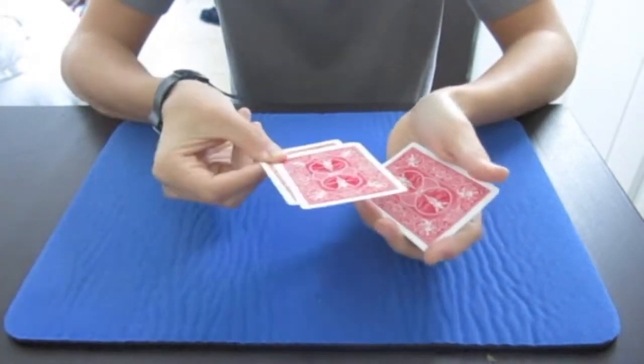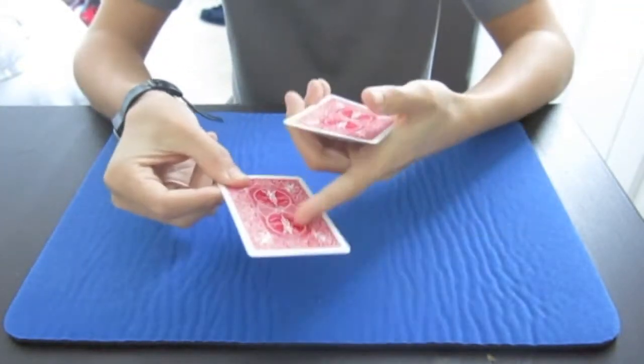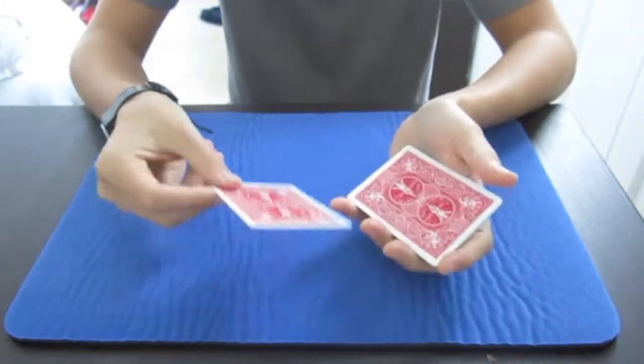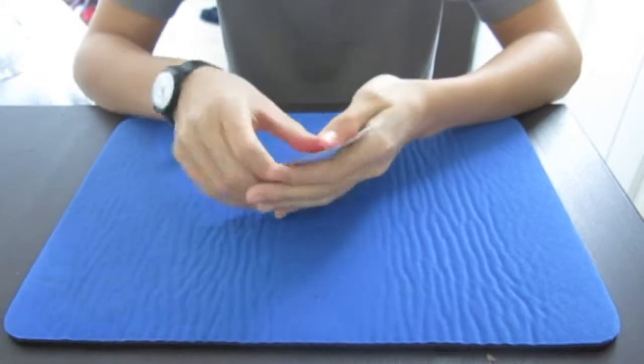And you're going to bring it to your left hand, catch it with the thumb. You still have this card, the last one. And this one you just place it on top and they didn't see the ace.